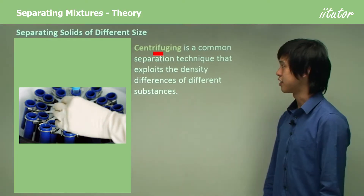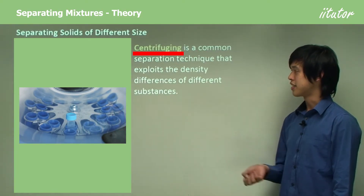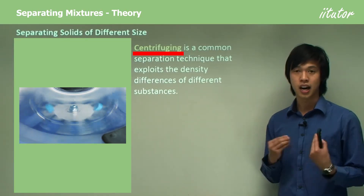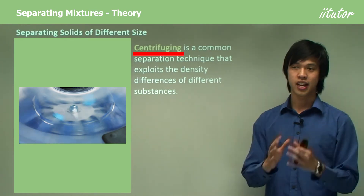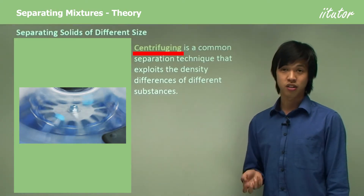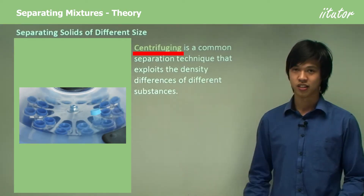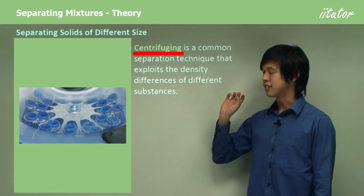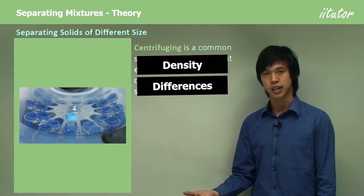Another way to do this is through centrifuging. Centrifuging is a common separation technique that exploits the density differences of different substances. Some substances are more dense than others — for instance, air is not very dense, I can walk through it, whereas if I was to try and do the same in lead, that would be much more difficult. In centrifuging, what we're exploiting is that some particles are naturally more dense than other particles.